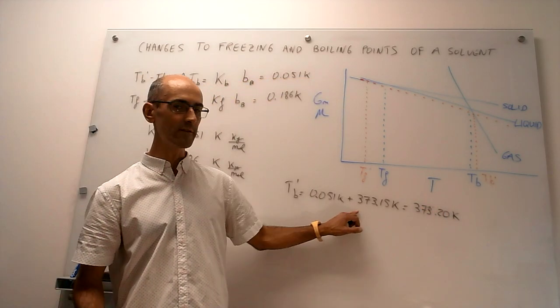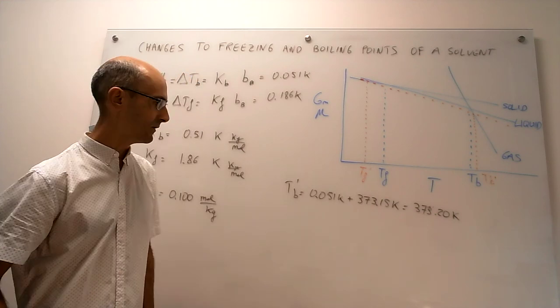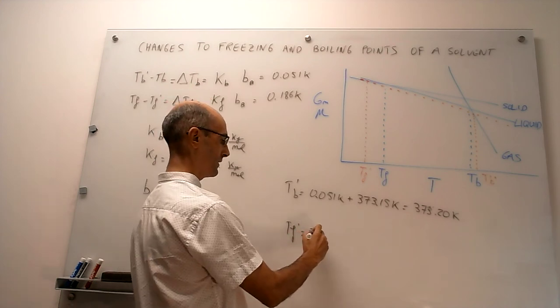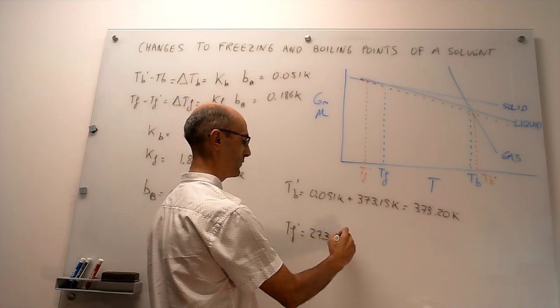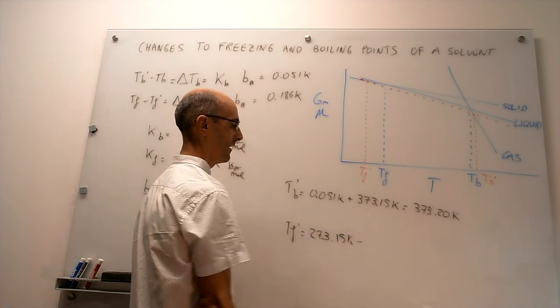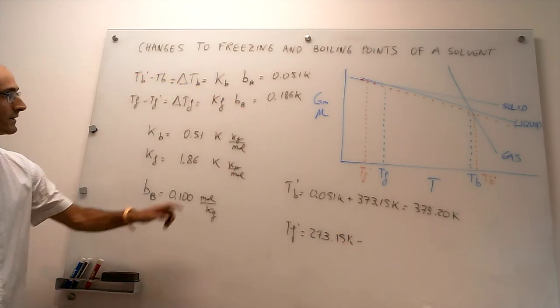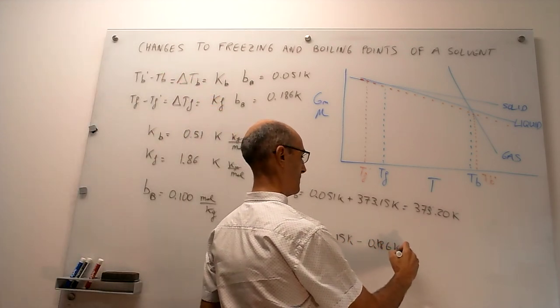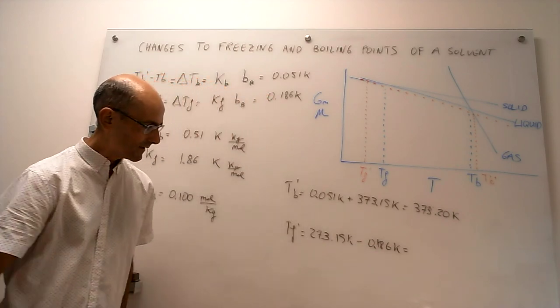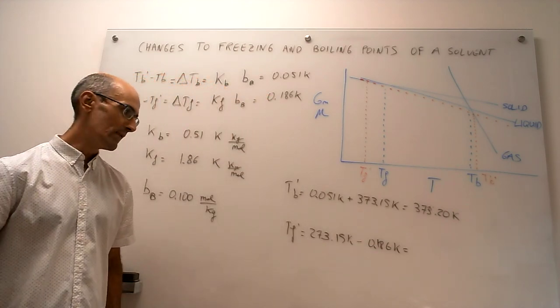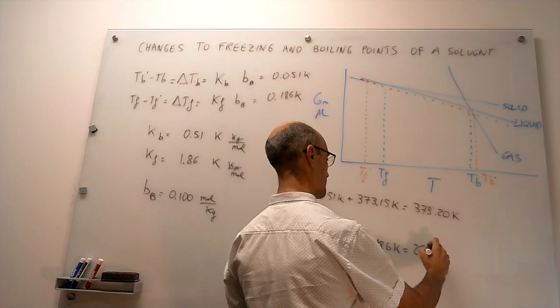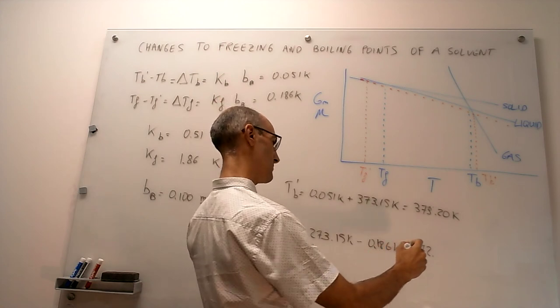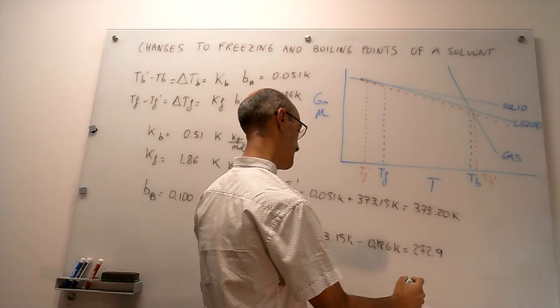So it's a very small change to the boiling point, and the freezing point then will be, TF' will be the actual freezing point of pure water, 273.15 Kelvin, minus the change in the freezing point, which is 0.186. So when you calculate that, you will see that the freezing point now is going to be 272.964 Kelvin.